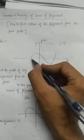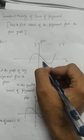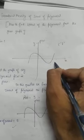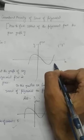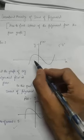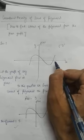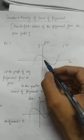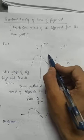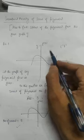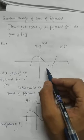Let us count: first, second, third. So in this figure the graph intersects the x-axis at three points. Therefore the number of zeros of this polynomial will be three — there will be three zeros.